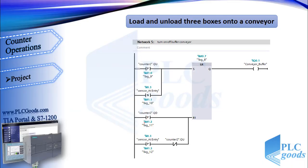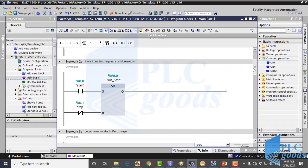Let's see my last network program to turn the buffer conveyor on and off. This network is similar to network 4. The buffer conveyor will be on if there are three boxes on the conveyor, and it will be off if it doesn't have three boxes. Also, if the first sensor detects a box, the conveyor must be on until the box is completely placed on the buffer conveyor. We don't turn off this conveyor for the third box, because all three boxes must be moved.